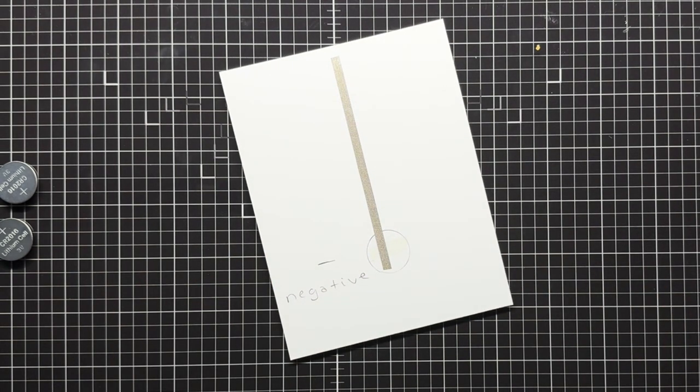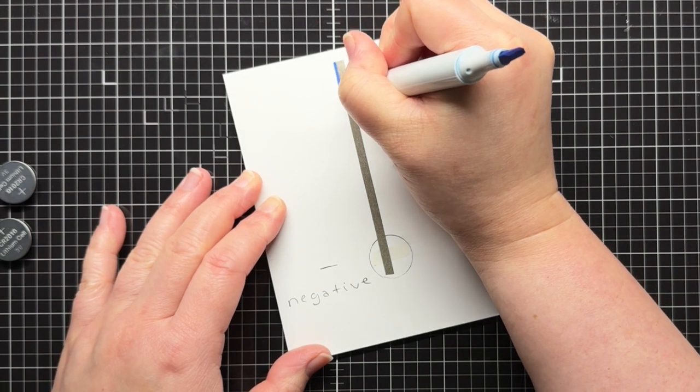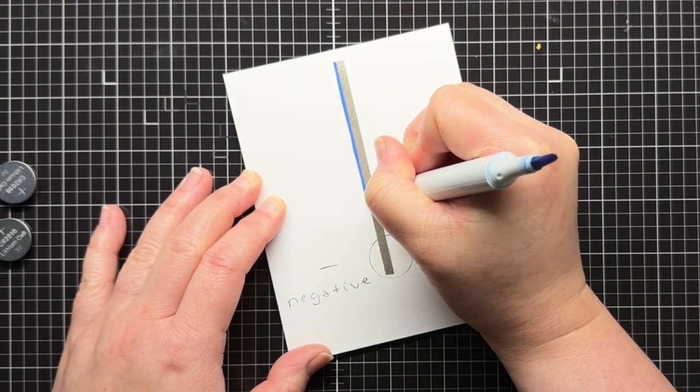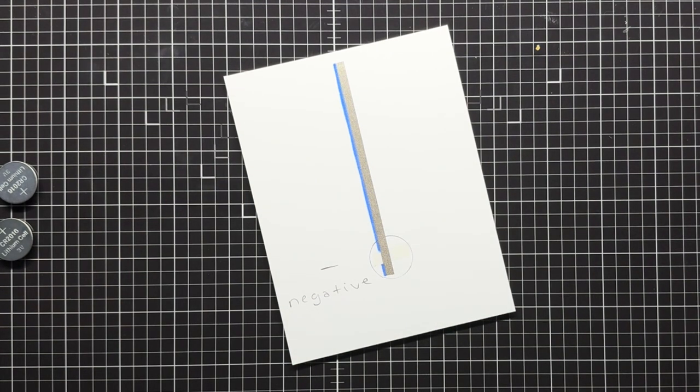You'll notice that our design team often uses red and blue to help show the negative and positive sides of their circuits as well. The tape is the same, the colors are simply there as a reference guide.